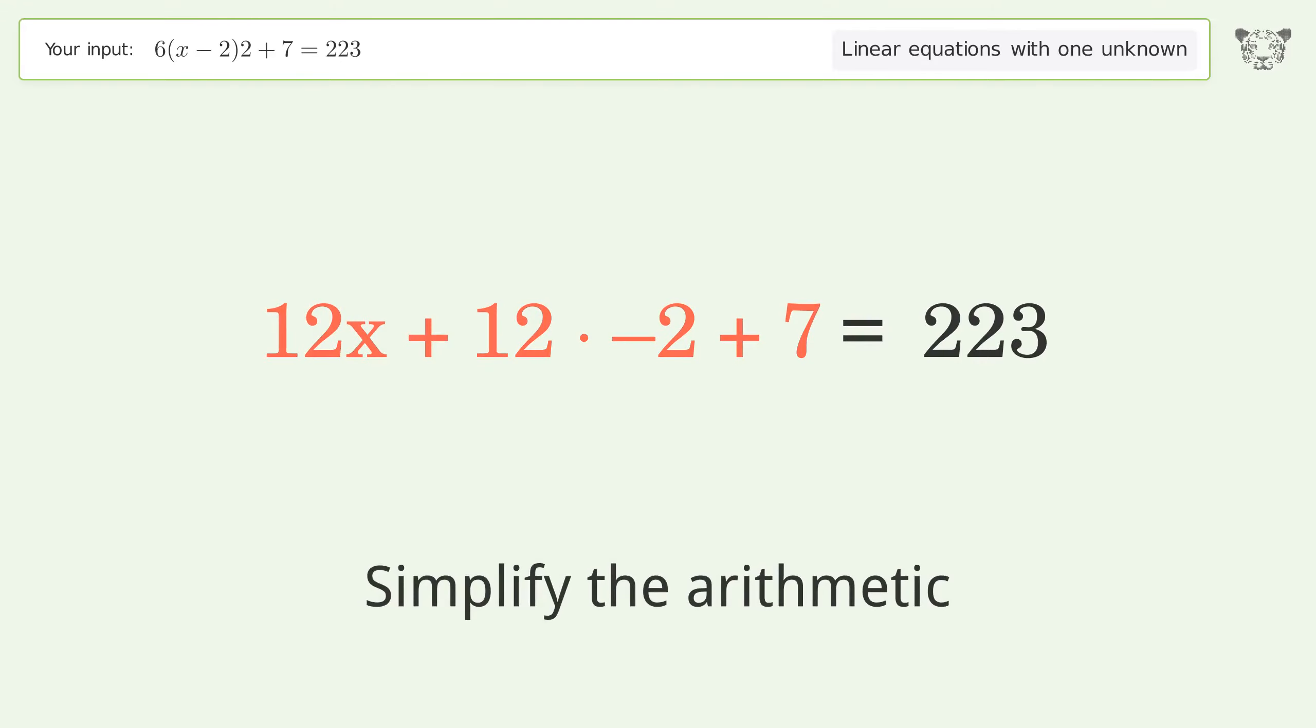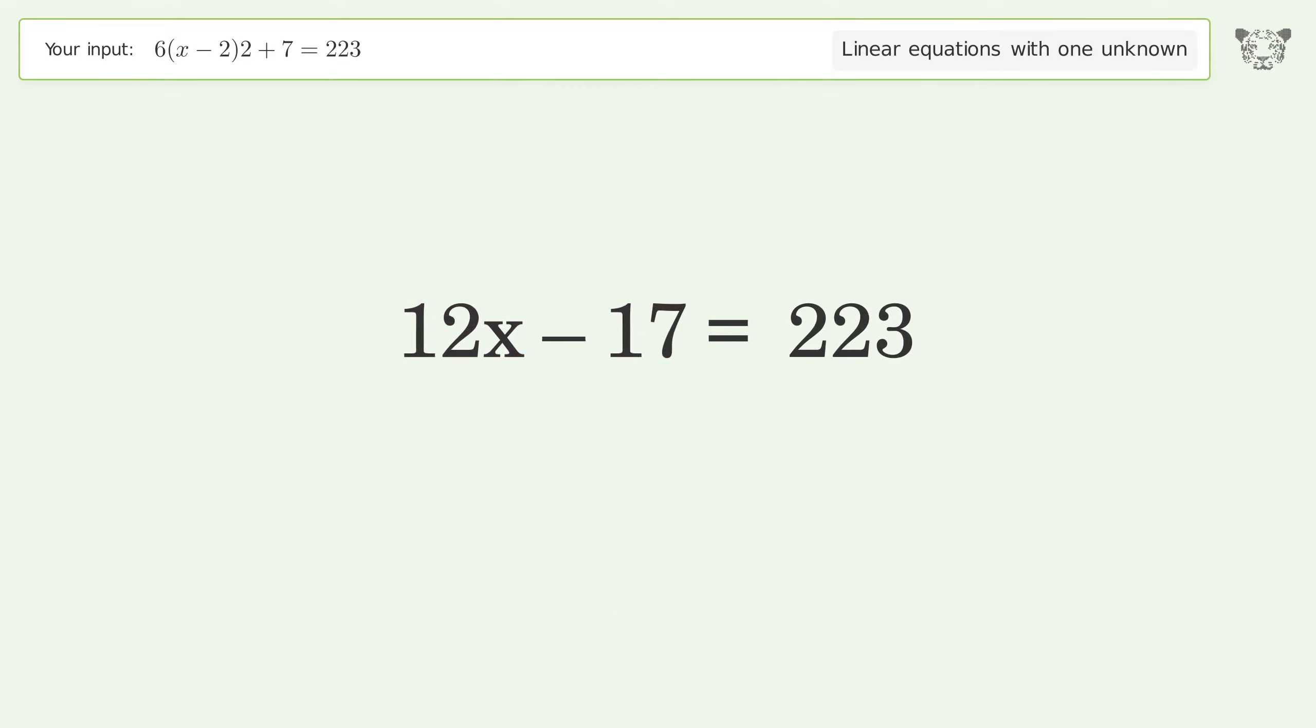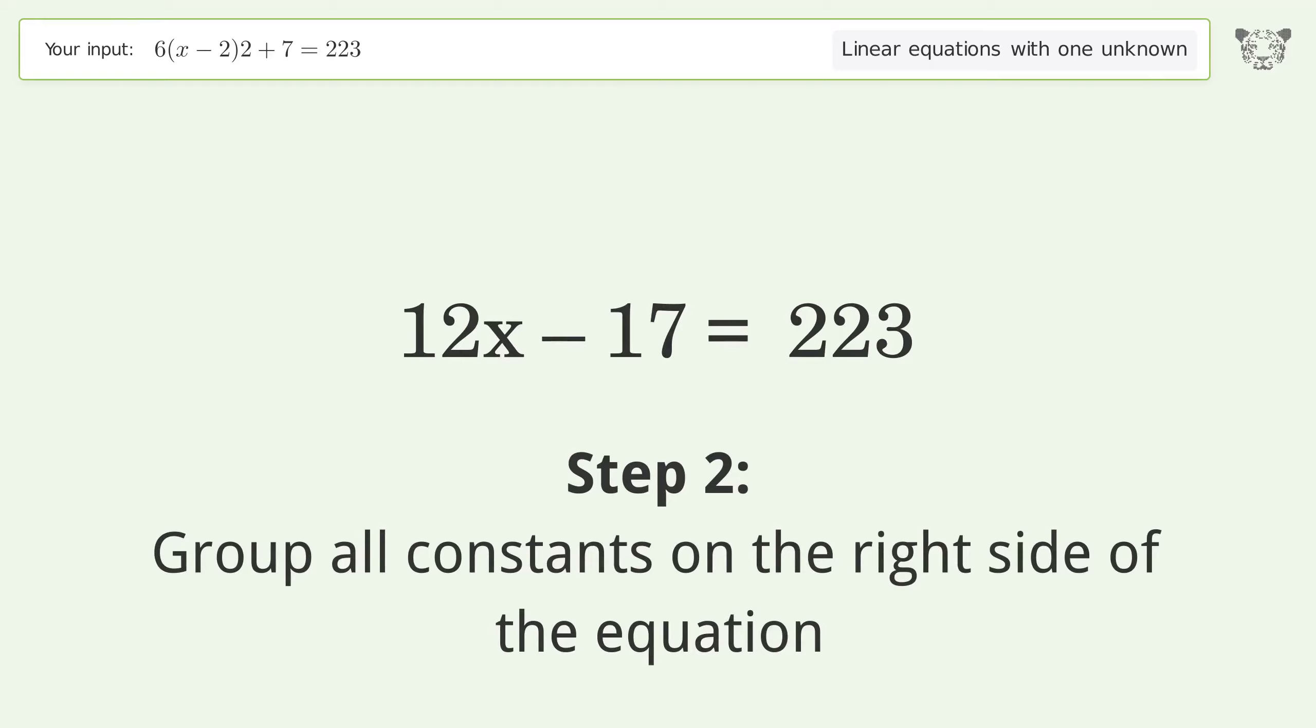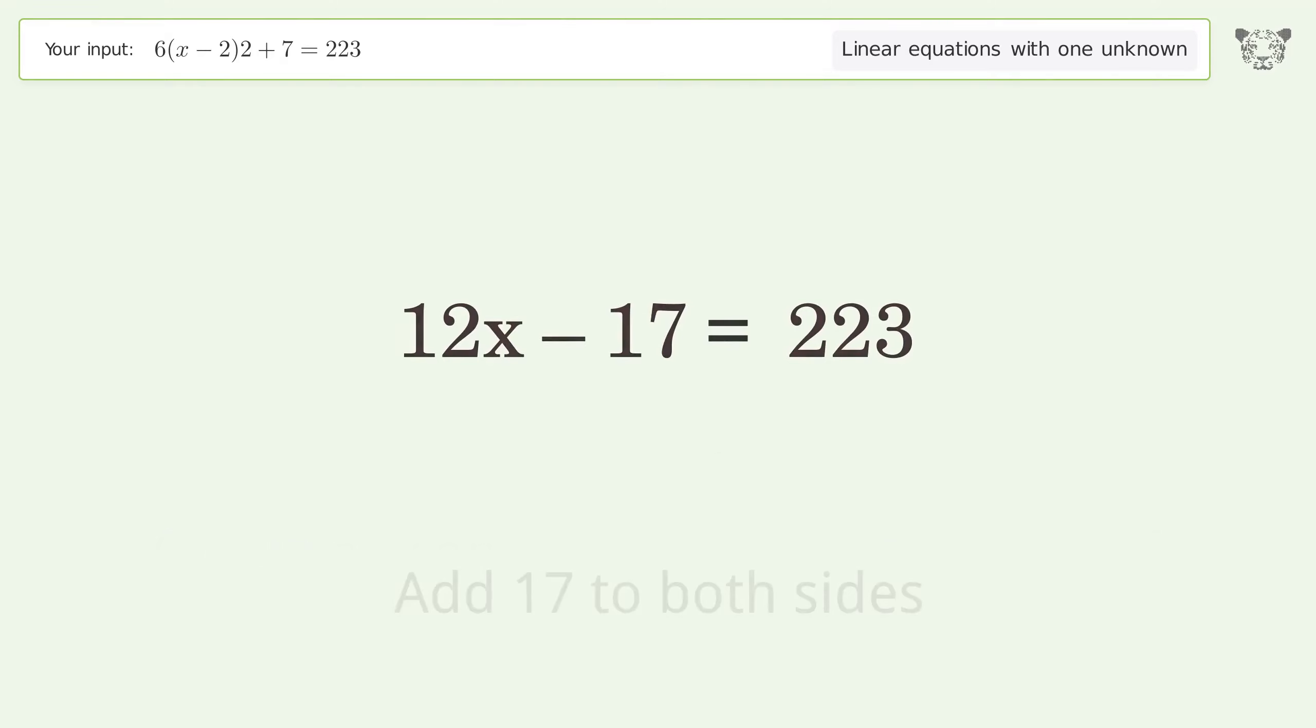Simplify the arithmetic. Group all constants on the right side of the equation. Add 17 to both sides. Simplify the arithmetic.